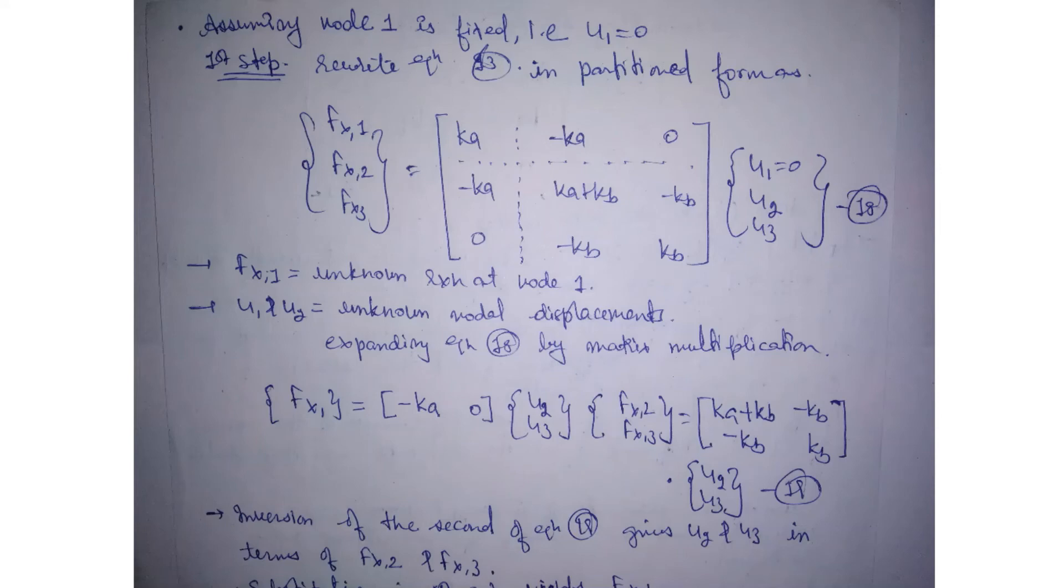Here we have Fx1, unknown reaction at node 1, and U2 and U3, unknown nodal displacements. Expanding equation 18 by matrix multiplication, we have this solution: Fx1 equals [minus Ka, 0] multiplied by [U2, U3].